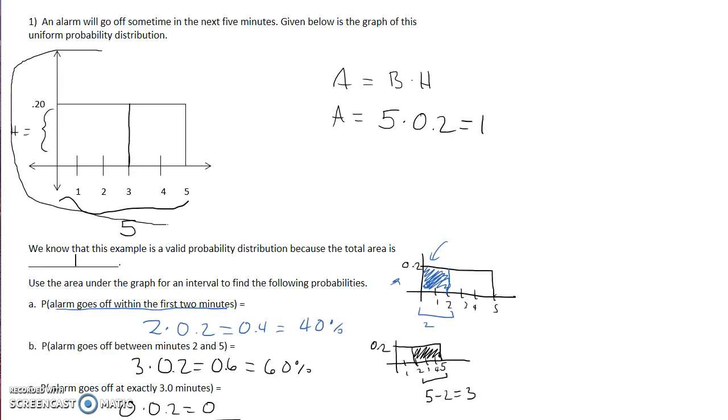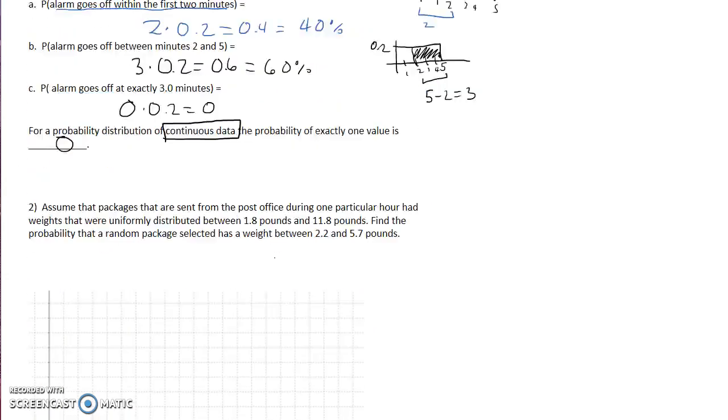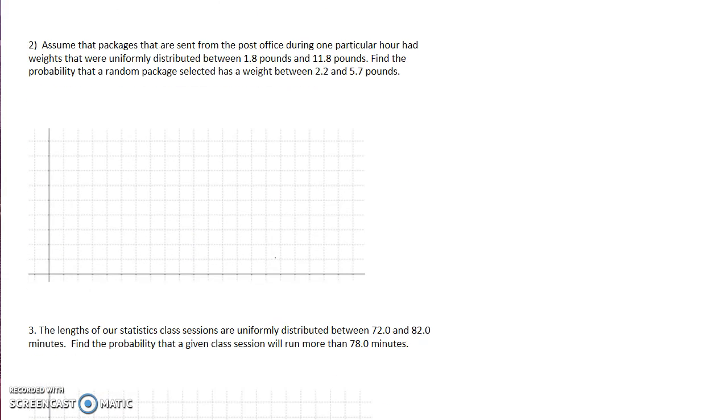You can see that they have set the distribution up for you. That's not the case in this problem. It says that assuming the packages are sent from a post office during one particular hour had mean weights that are uniformly distributed between 1.8 and 11.8 pounds, find the probability that a random package selected has a weight between 2.2 and 5.7 pounds.